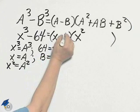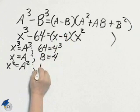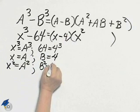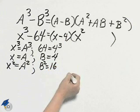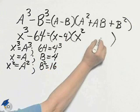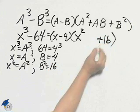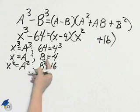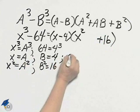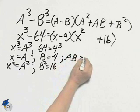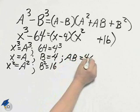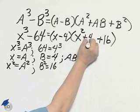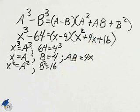So there's my minus 4. B squared is 4 squared, or 16 — the plus B squared is plus 16. Everything's in there except that AB. A times B is 4X. The problem's done.